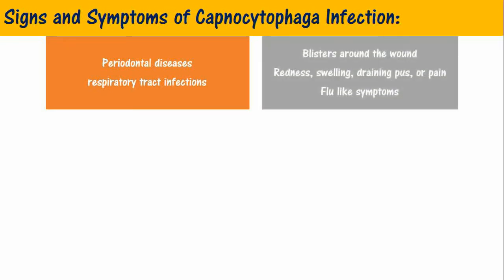Infections transmitted from animals usually occur within 1 to 14 days after contact with animal saliva. This infection can cause a wide variety of symptoms such as: blisters around the bite wound within hours of the bite, redness, swelling, draining pus, or pain at the bite wound, and flu-like symptoms such as fever, diarrhea, stomach pain, vomiting, headache, confusion, and muscle or joint pain.